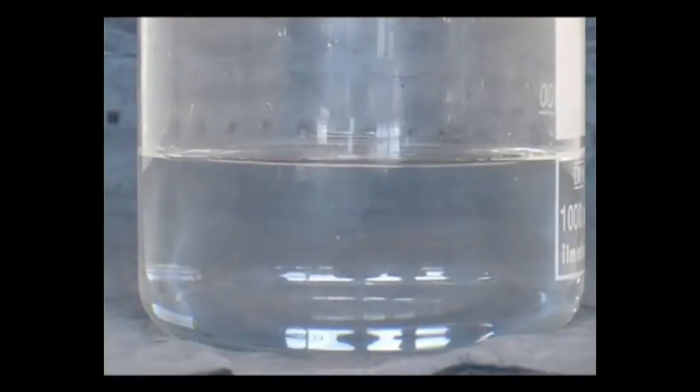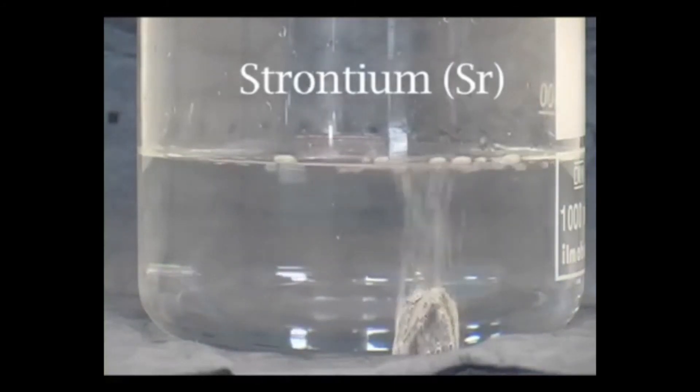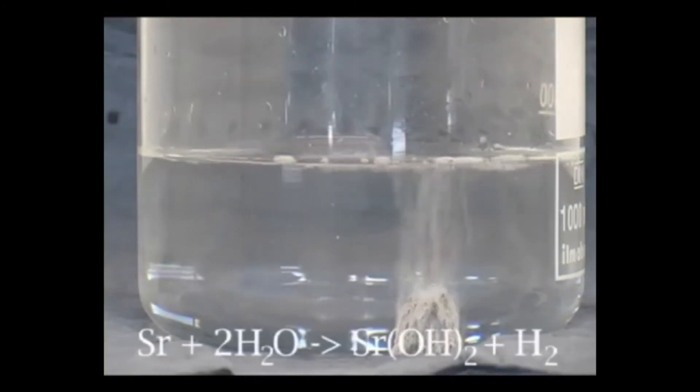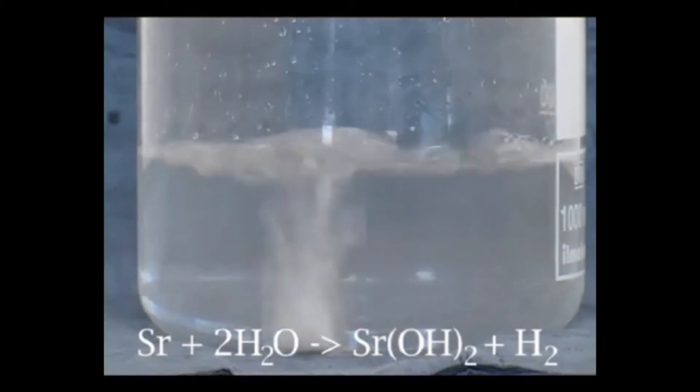If we continue down group two, we find strontium. This has to be stored under oil to stop it being oxidized by the air. The oil on the strontium causes the reaction to begin slowly, but gradually it picks up, and we can see that the strontium is reacting vigorously with the cold water.